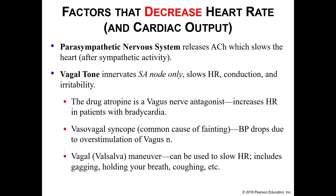The drug atropine is a vagus nerve antagonist — if your vagus nerve is going to slow down your heart, atropine will increase your heart rate, and can be given to patients with bradycardia. Vasovagal syncope, a common cause of fainting, occurs when you overstimulate your vagus nerve, causing blood pressure and heart rate to drop. A valsalva maneuver — holding your breath, gagging, or coughing — can also intentionally lower your heart rate by stimulating the vagus nerve.